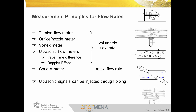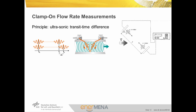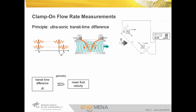Of all the above principles, only the ultrasonic flow meter is available as a clamp-on version, as ultrasonic signals can be injected through the piping. Ultrasonic flow meters based on the travel time difference principle require a set of two ultrasonic transducers sending and receiving signals, mounted to receive one another's signals. The travel time of a signal traveling downstream is compared to that traveling upstream and the transit time difference is derived. Using the pipe geometry — inner diameter or outer diameter and wall thickness — and the distance of the sensors, the mean fluid velocity and volumetric flow rate are calculated.